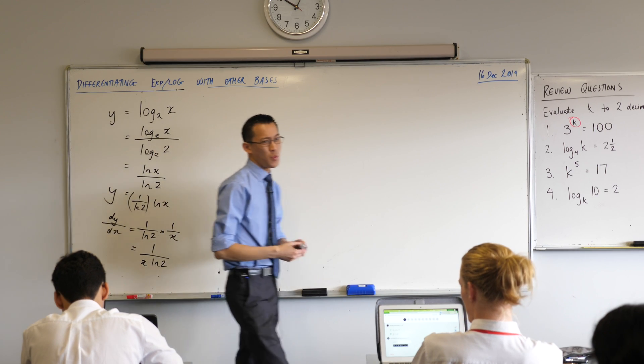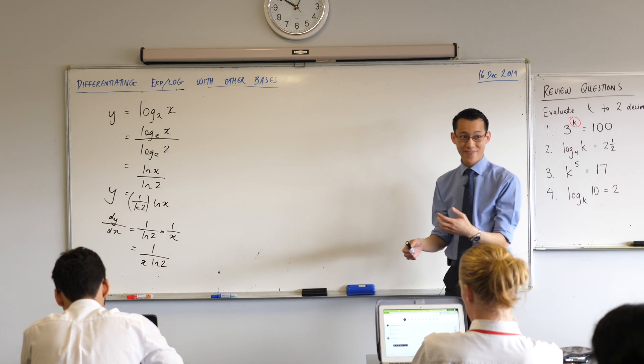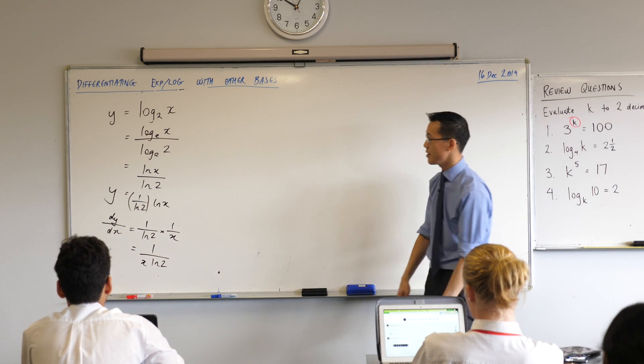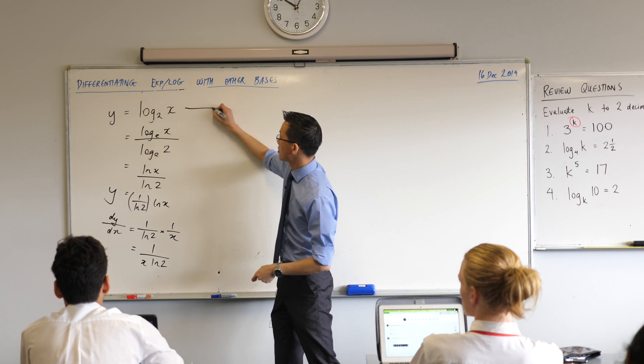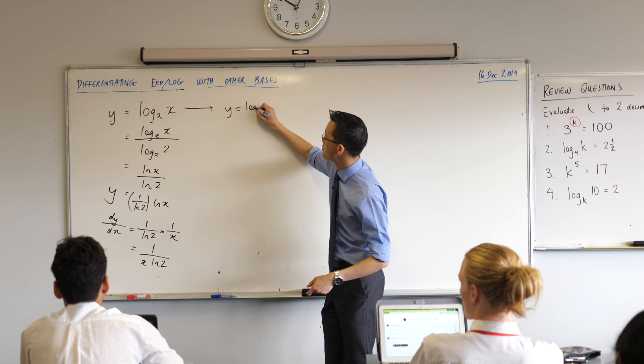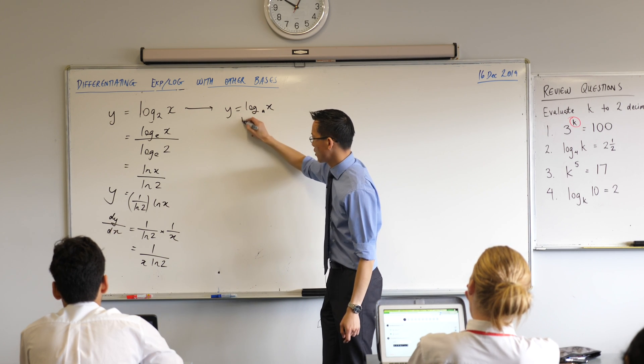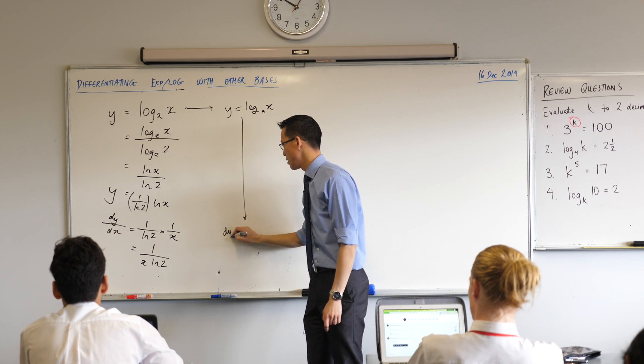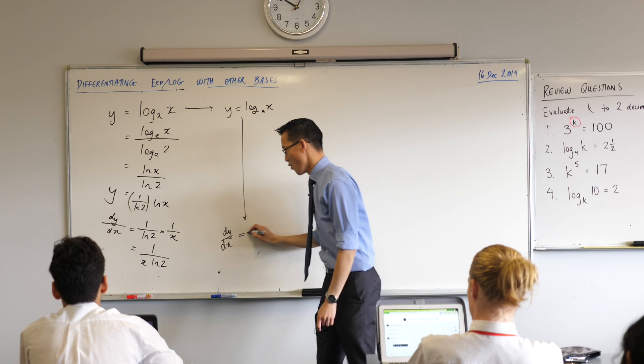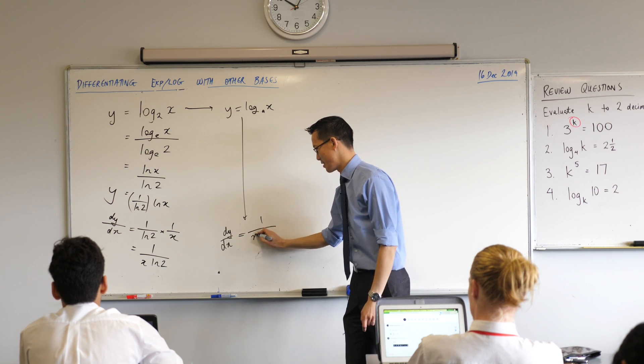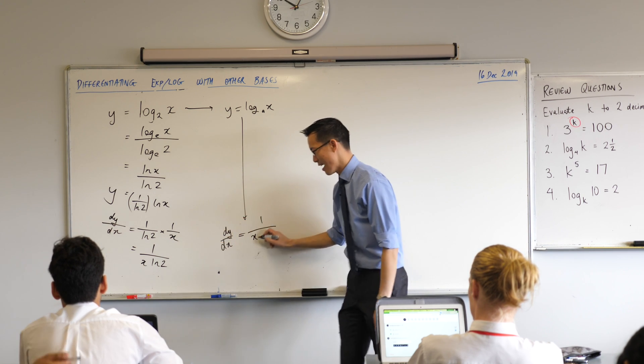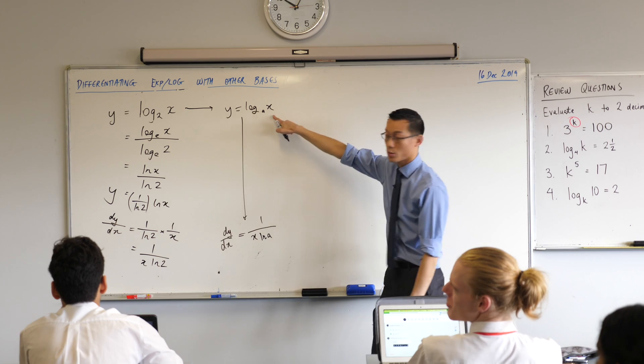So what I can do here is I can say, what if it wasn't 2? What if it was any number that you like? Well, I'll change this into log base a, any number that you like, and what you end up with is a derivative 1 over x, and it's log of whatever that base was.